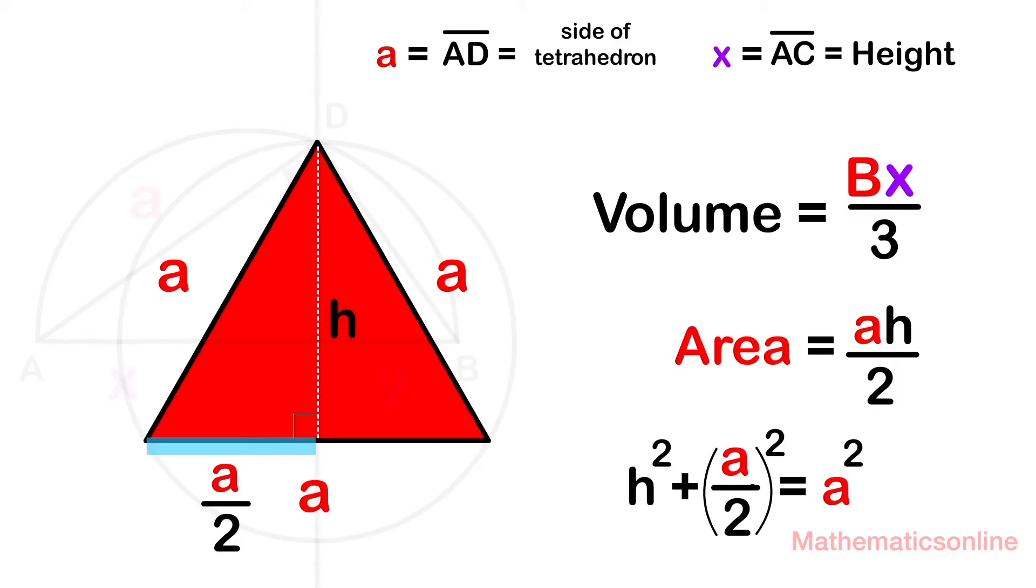h squared plus a divided by 2 squared is equal to a squared. If we solve for h, we get the square root of 3 times a divided by 2. And we'll substitute h above, so the area is the square root of 3 a squared divided by 4.